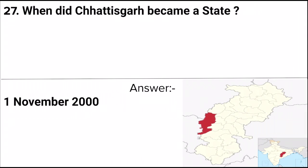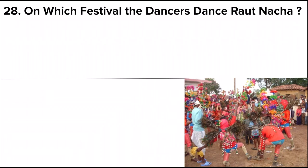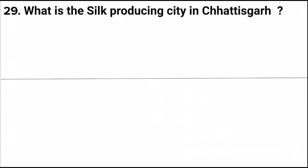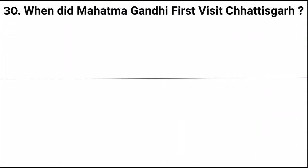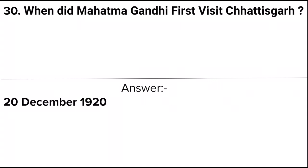Next question: When did Chhattisgarh become a state? Answer: 1st November 2000. Next question: On which festival does the dancer perform the Raut Nacha dance? Answer: Diwali. Next question: What is the self-producing city in Chhattisgarh? Answer: Champa.